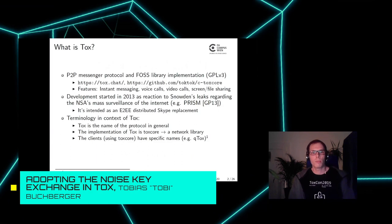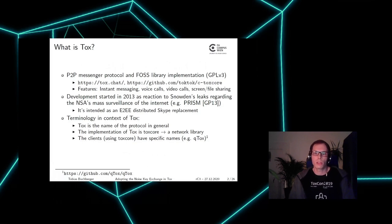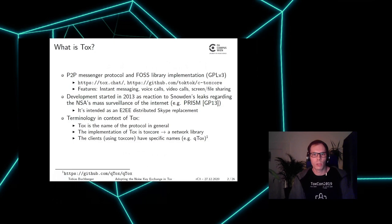TOX is a peer-to-peer messaging protocol and a free and open source library implementation thereof. This protocol provides features like instant messaging, voice calls, video calls, and screen or file sharing. The development of TOX started in 2013 as a reaction to Snowden's leaks regarding the NSA's mass surveillance of the internet, and is intended as an end-to-end encrypted distributed Skype replacement.